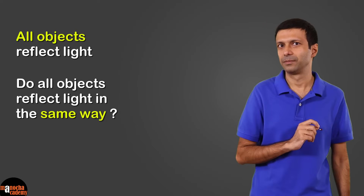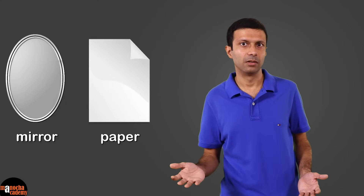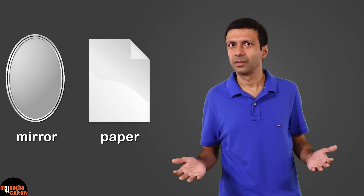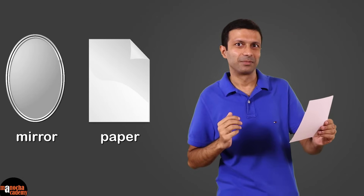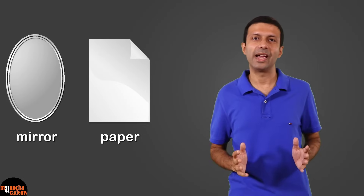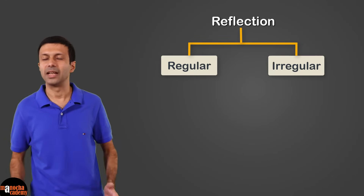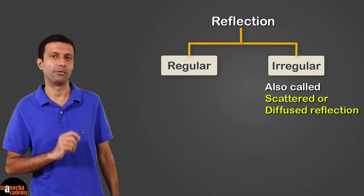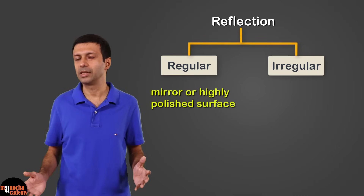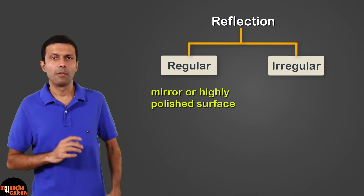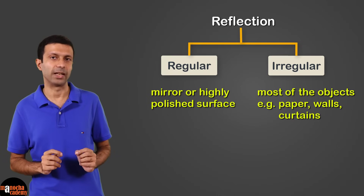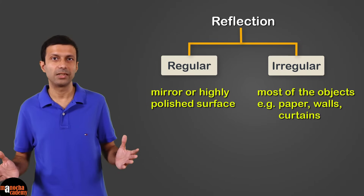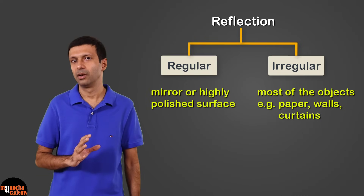An interesting question is: do all objects reflect light in the same way? If you compare a mirror and a sheet of paper, do they reflect light in the same manner? If that were true, I wouldn't need to buy a mirror — I could just comb my hair using a sheet of paper! But we know that's not the case. There are two types of reflection: one is regular reflection, and the second is irregular, or scattered, or diffuse reflection. A mirror or a highly polished surface is an example of regular reflection, but most objects around us — like paper, walls, and curtains — are examples of irregular reflectors of light because they scatter the light.